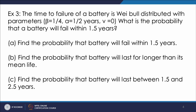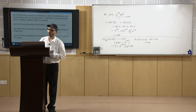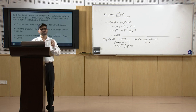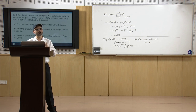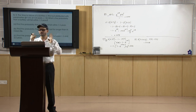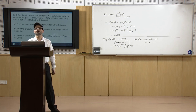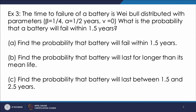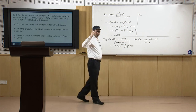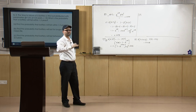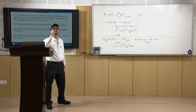As we know, for the Weibull distribution the PDF f(x) is given as (β/α)·((x − ν)/α)^(β−1)·exp(−(x/α)^β) when ν = 0. Finding the probability that the battery will fail within 1.5 years means we need the cumulative distribution function value up to 1.5 years.